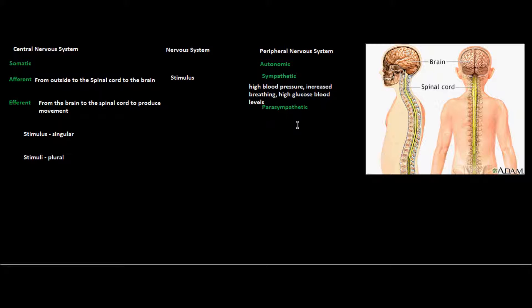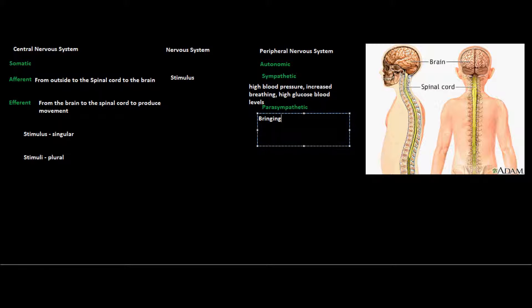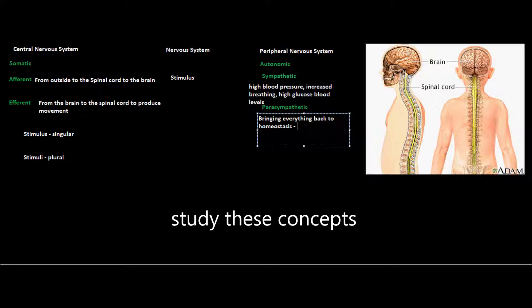When we talk about the parasympathetic nervous system, we're talking about that division responsible for calming everything back to normal. Everything that was disturbed by the sympathetic nervous system has to be brought back to regular, and we often use the term 'homeostasis' to refer to everything returning to normal under regular conditions. For example, if blood pressure had gone up to 140 over 91 — which is actually really high — the parasympathetic nervous system brings it back down to around 120 over 80. The same goes for blood sugar levels that had spiked up.